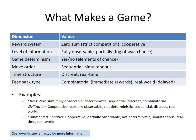Feedback type is either combinatorial — meaning you have an immediate reward — or real-world, where it is delayed. Almost all games of interest are real-world games; even tic-tac-toe is a real-world game where the consequences of your move do not become immediately apparent. Here are some examples: Chess is a zero-sum game, fully observable, deterministic, sequential, discrete, and a real-world game. Civilization, on the other hand, is cooperative, partially observable, non-deterministic, and sequential. Command and Conquer is a typical real-time game.